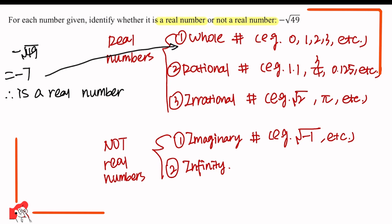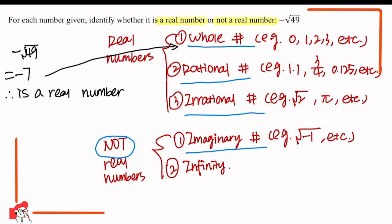Now let's look back and consolidate the whole process. Always remember that real numbers include three classifications: whole numbers, rational numbers, and irrational numbers. Numbers which are not real numbers include two types: imaginary numbers and infinity. Now we're done with this question — thank you!